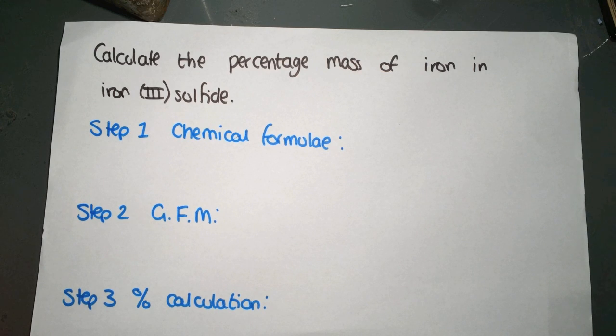The first example we're going to look at is the percentage mass of iron in iron sulfide. That would be working at how much iron is in a particular ore of iron.